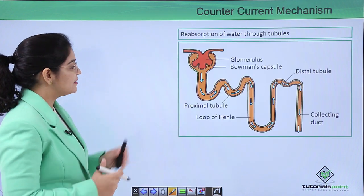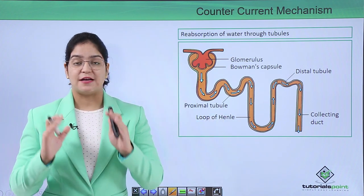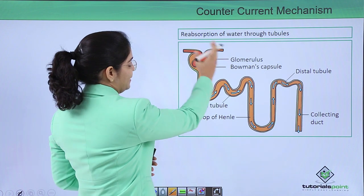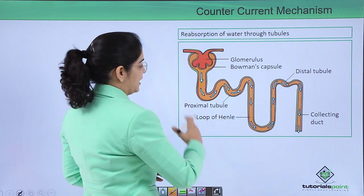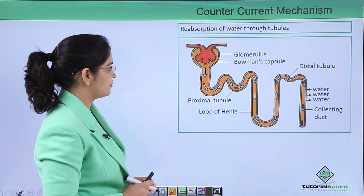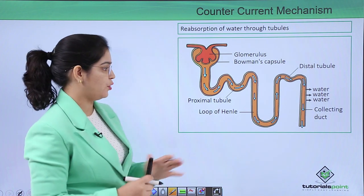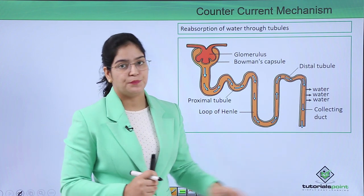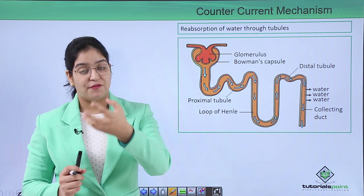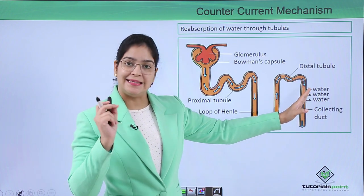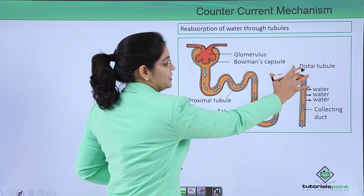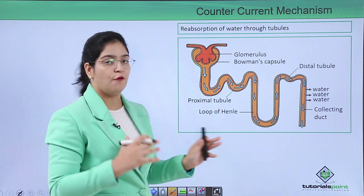Now let's learn how the mechanism of concentrated urine occurs in the kidney. This is the structure of the nephron — the functional unit of the kidney. The kidney has two main parts: the Bowman's capsule part and the tubular part. In the tubular part we have different tubes: proximal convoluted tubule, loop of Henle, distal tubule, and the collecting ducts. To have concentrated urine, the first thing we want is to reabsorb water from the tubules — mainly from the collecting duct.